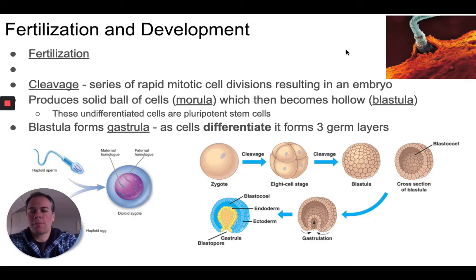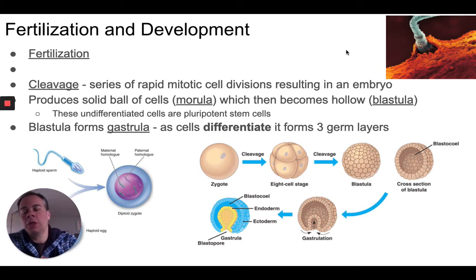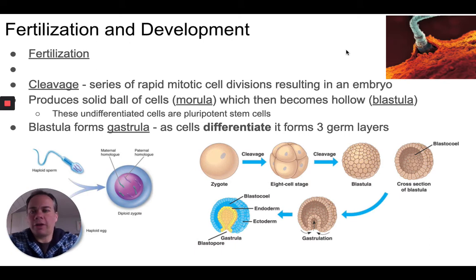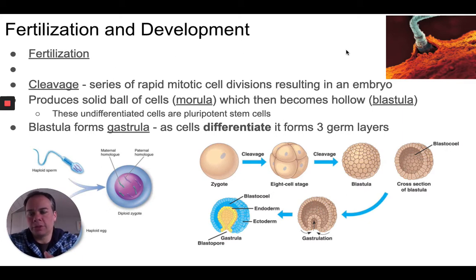We're going to finish up with the reproduction section of our notes. So far in this unit we began by talking about meiosis, the cell division that produces gametes, and we went on to talk about human reproductive systems. In this set of notes, we're going to talk about fertilization, development in several types of organisms, and then focus primarily on human fertilization, development, and birth.